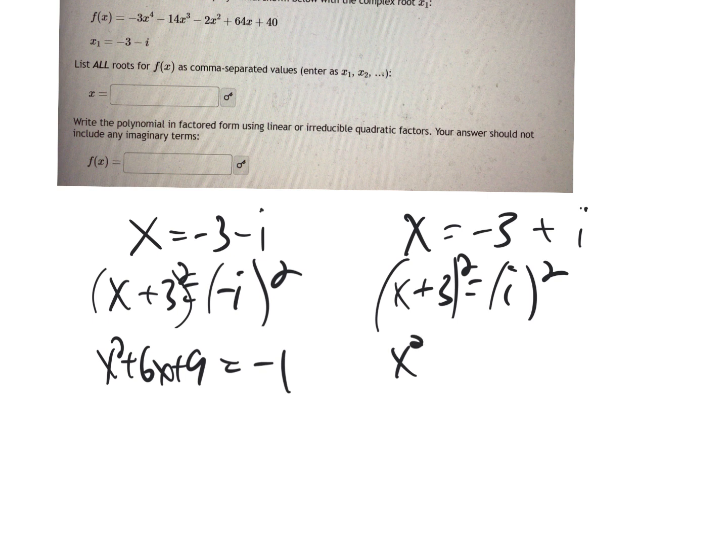And notice what happens over here. x squared plus 3x plus 3x is 6x plus 9 again. And this also becomes negative 1. So do you see I'm getting the exact same equation? So I really only have to do this with one side of it.